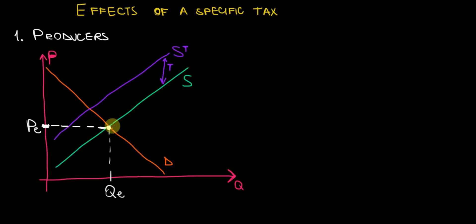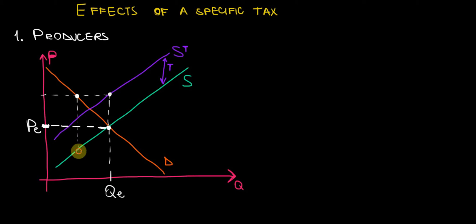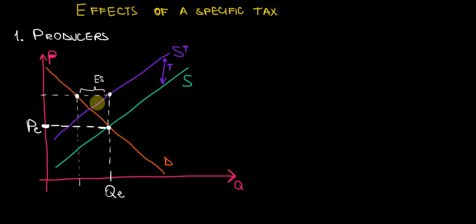Now let's see what happens when we have a specific tax. At the same quantity in equilibrium, we can see that on the new supply curve — the purple one — there is no demand willing to pay that price, because the demand is at a lower level on the orange curve, whereas the supply that firms want to offer is on the purple one. We are creating an excess supply, and as a result we have to lower the price until we reach a new equilibrium, which is the intersection between the demand curve and the new supply curve that includes the tax.